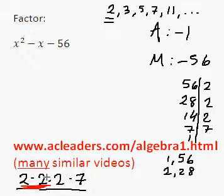2 and 2 and 2 and 7, that'll be 4 and that'll be 14. 4 and 14, also not a good choice to add up to -1.